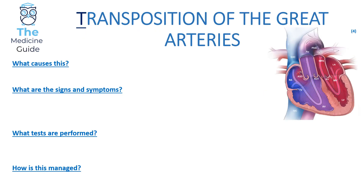In Transposition of the Great Arteries, the aorticopulmonary segment fails to spiral and septate, so the aorta and pulmonary artery swap over. Normally the aorta receives oxygenated blood from the left ventricle. In transposition, the aorta receives deoxygenated blood from the right side of the heart, which then travels around the body.